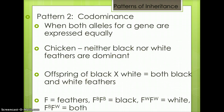Pattern 2 is codominance. This is when both alleles for a gene are equally expressed. For example, in chickens, neither black nor white feathers are dominant. Offspring of a black chicken crossed with a white chicken would result in chickens with both black and white feathers.